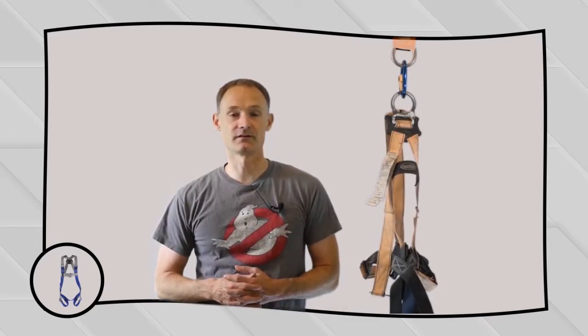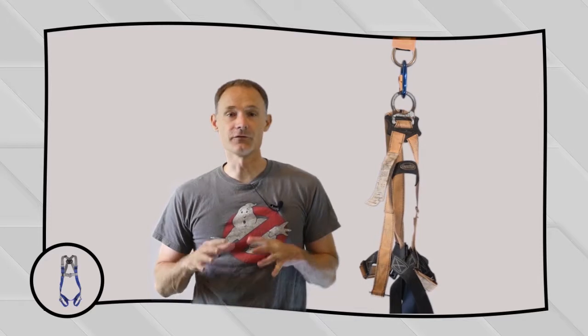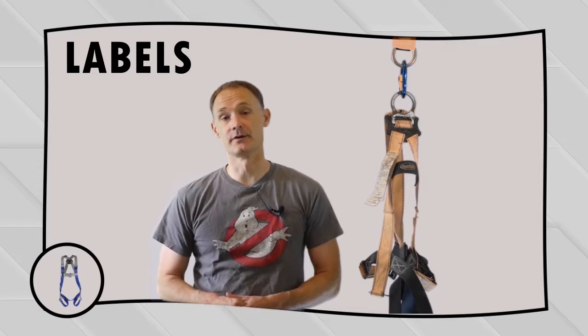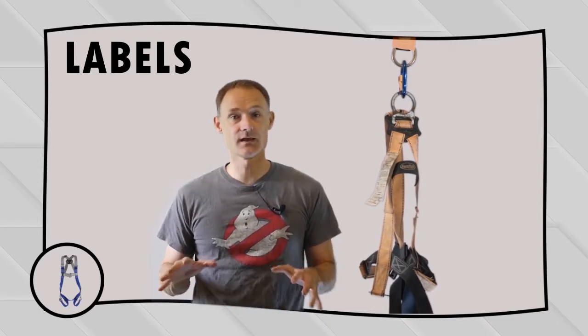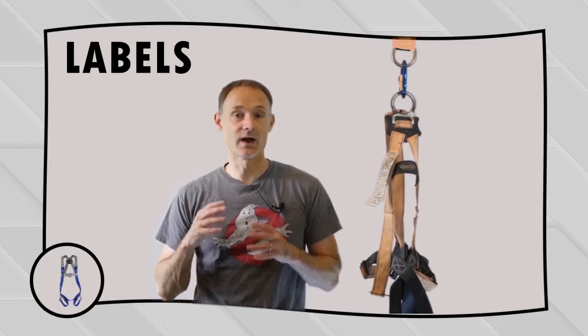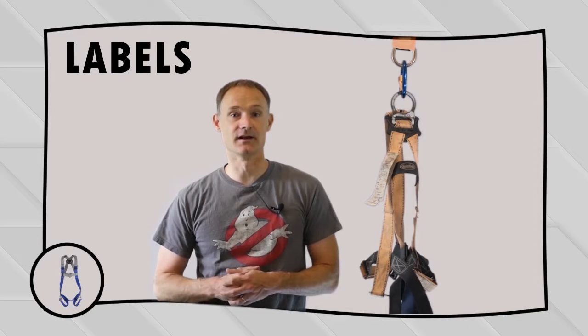So let's walk through a fall protection harness inspection. The first thing to look for in a fall protection harness is does it have a label? Now this is true across the board with all safety equipment. If it doesn't have a label or if that label is not readable, you can't use it. Doesn't matter how good a condition the actual equipment is in, you have to have that label and it must be legible.